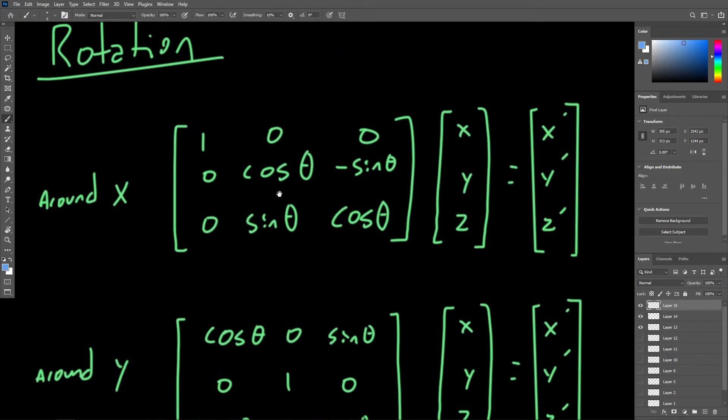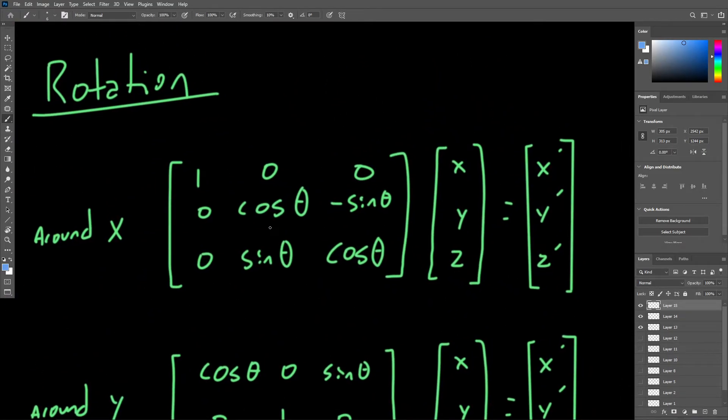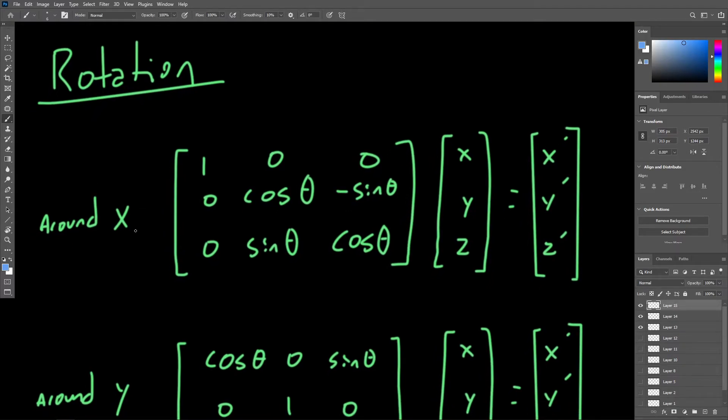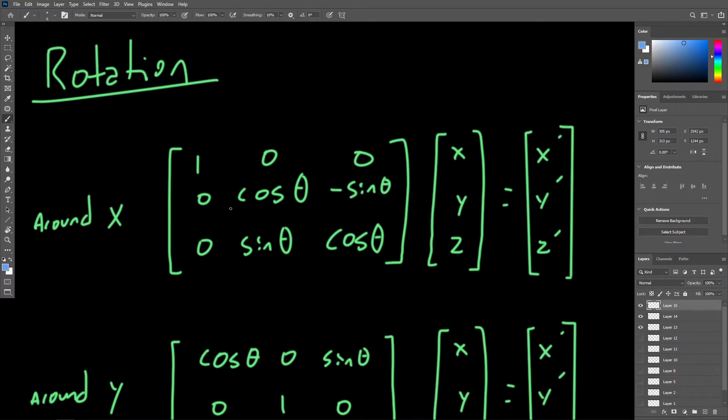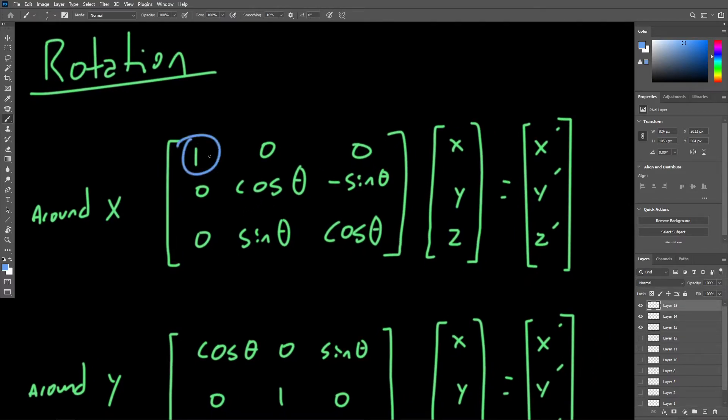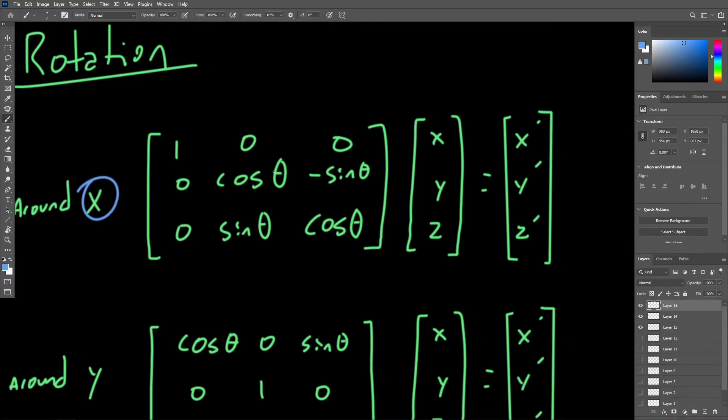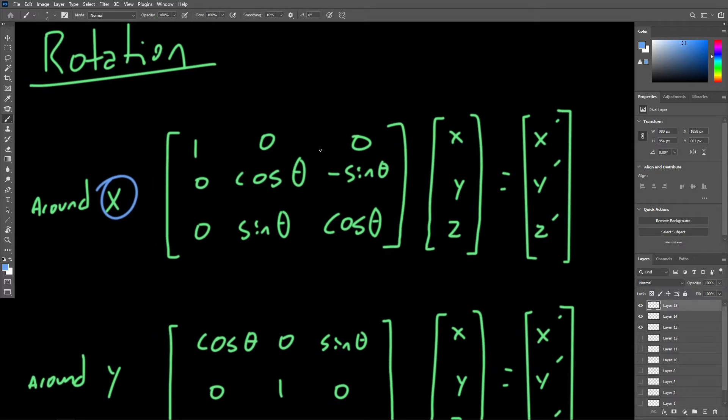But if we take a look a bit closer at one of these formulas, it's actually not that bad. We can see here that basically, when rotating around a particular axis, we don't change anything for the axis that we are rotating around. Instead, we use cosines and sines of the angle that we're working with to change this square shape of matrix elements involving the other two axes.